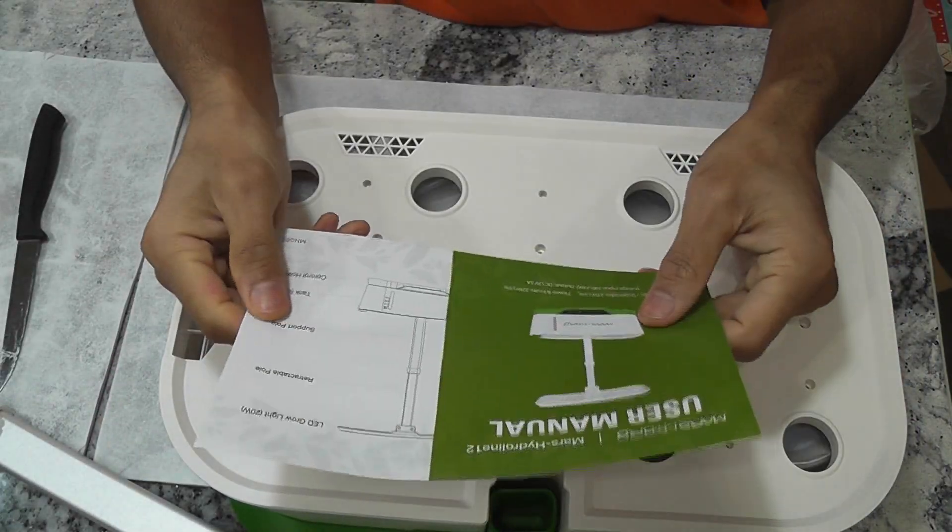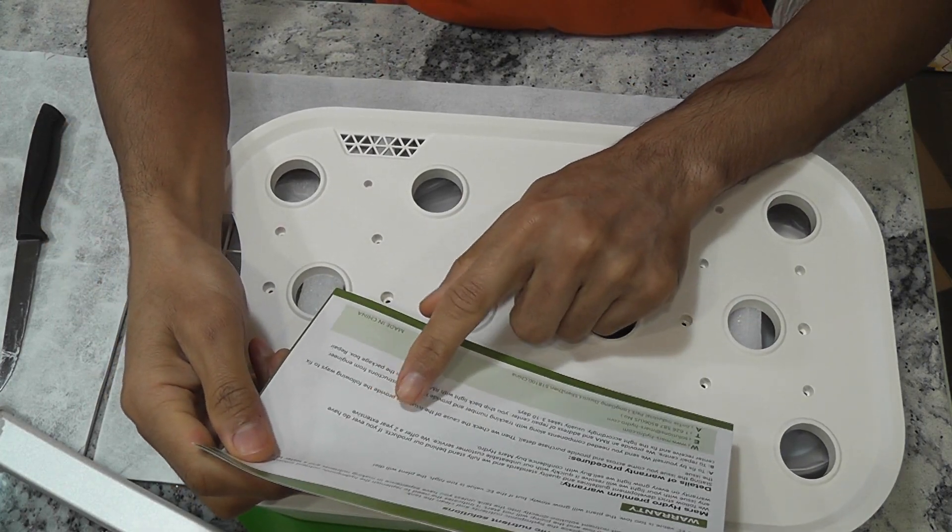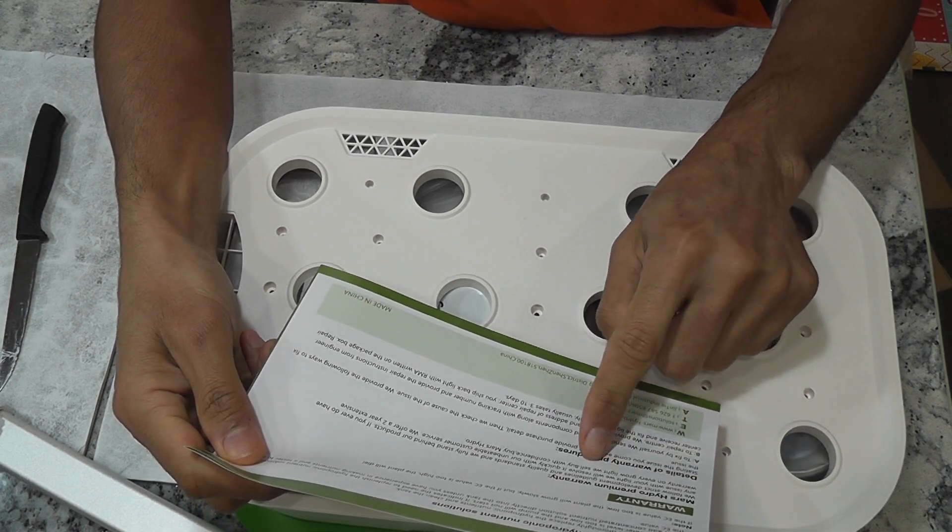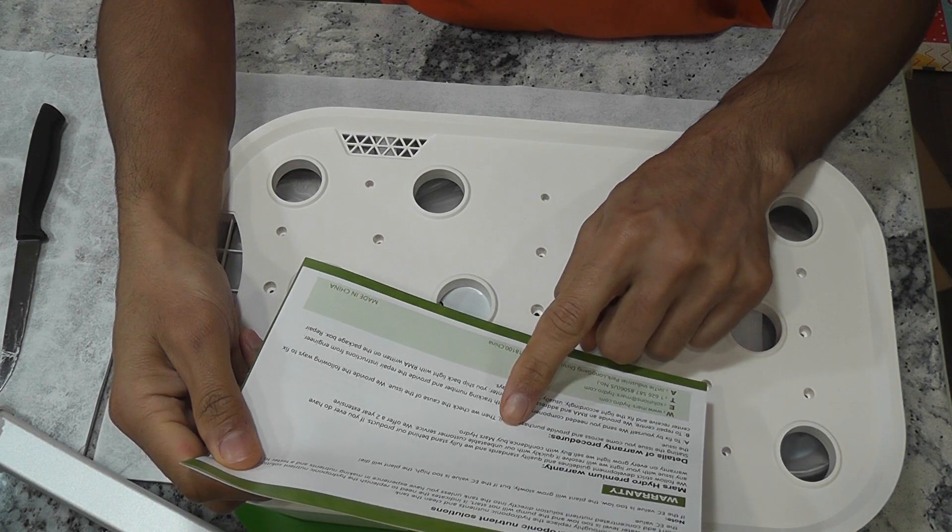First thing is the user manual. Let's check the warranty information. They are offering two years extensive warranty on all the lights. No further details, but I am hoping that they will replace the lights if they break.